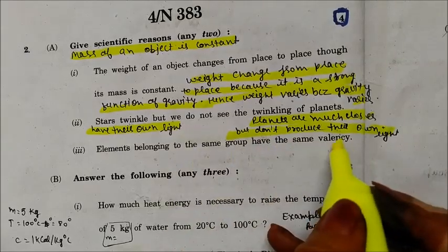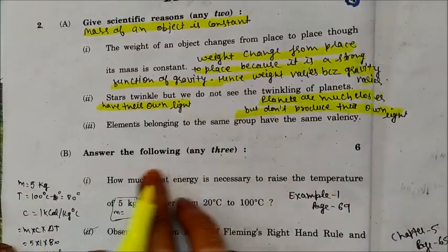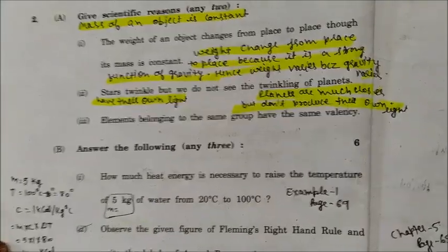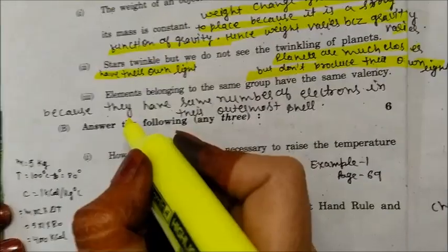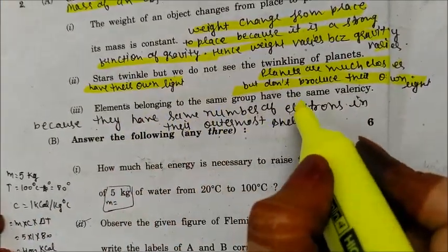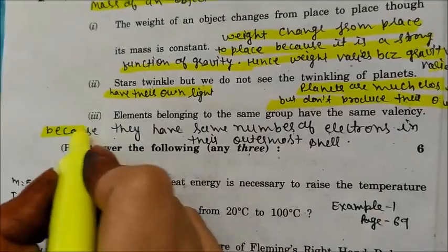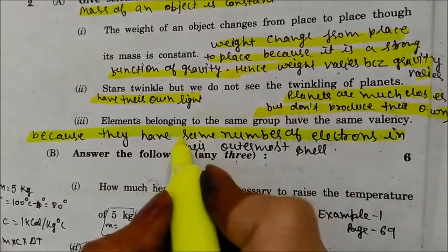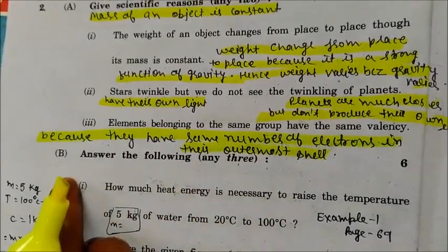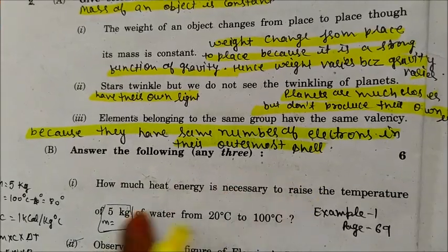Elements belonging to the same group have the same valency because they have the same number of electrons in their outermost shell.